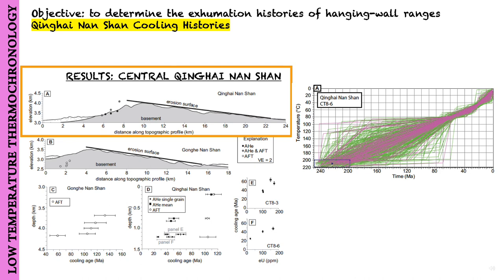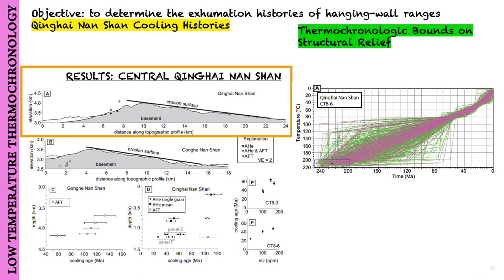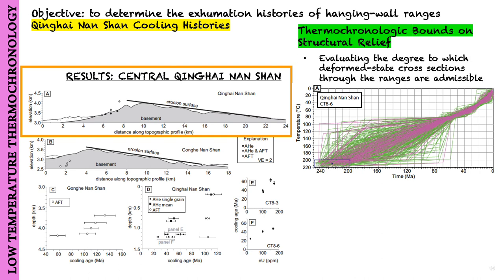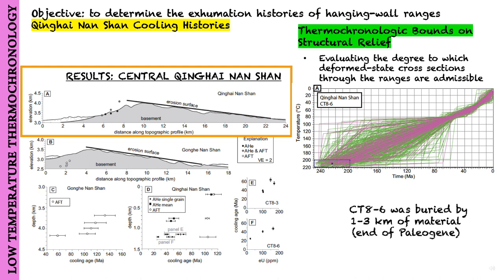In the section on thermochronologic bounds on structural relief, they use the thermochronology results to evaluate the degree to which the deformed-state cross-sections through the ranges are admissible. At typical geothermal gradients, sample CT-86 was buried by 1 to 3 kilometers of material at the end of the Paleogene, which is in the range of depth of CT-86 below the Qinghai-Nanshan erosion surface and presumably Neogene structural relief.